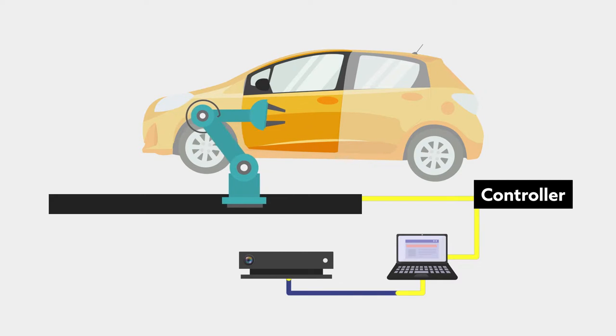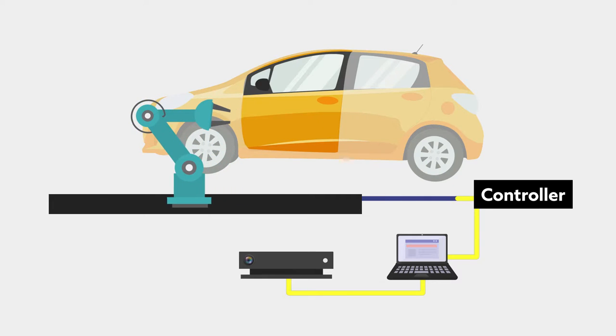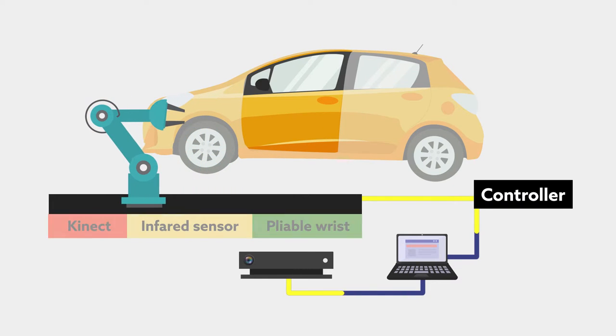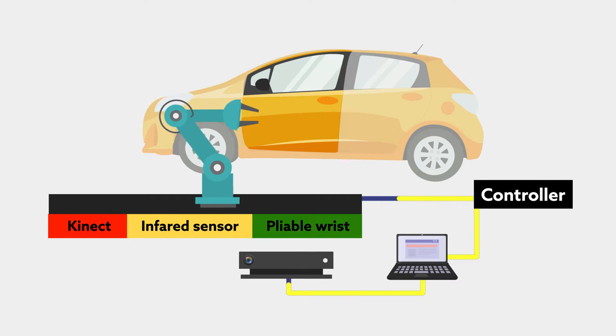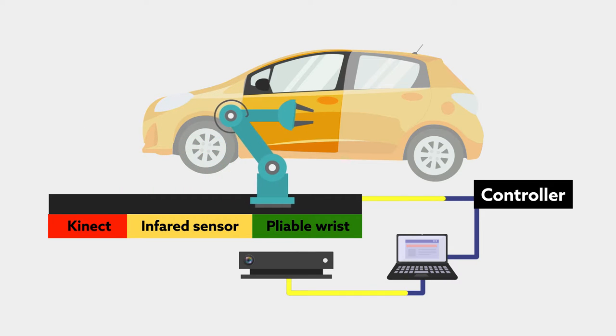For different ranges of operation, the robot was supplied with different input data. The Kinect generated model when far away, infrared sensor data when nearby, and force sensor data obtained through a pliable wrist when touching the door.